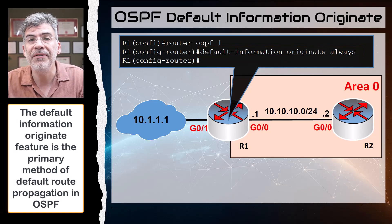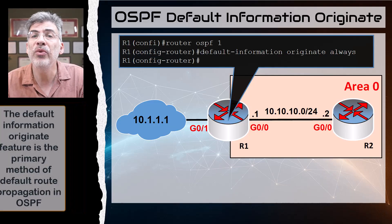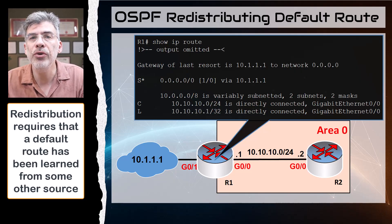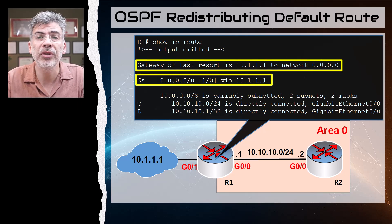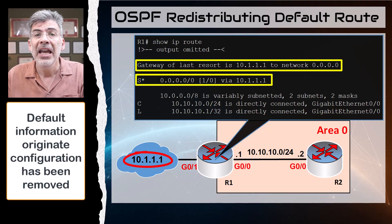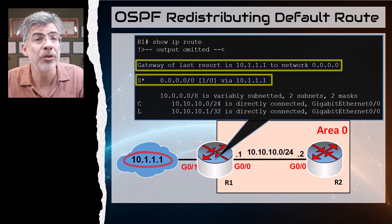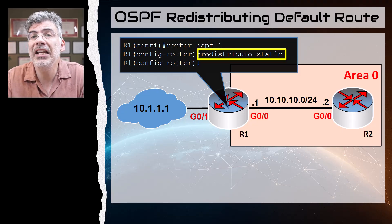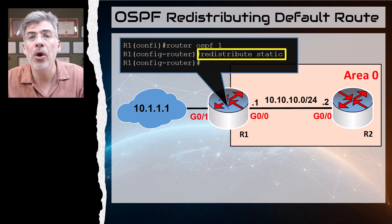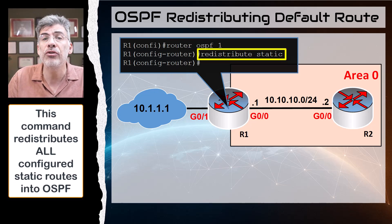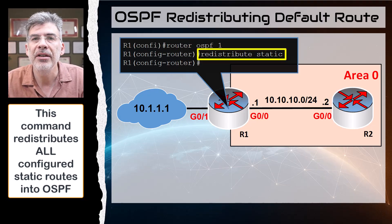The default-information originate feature is the primary way to advertise default routes in OSPF, but you can also do it using redistribution. For redistribution to work, we must have learned of a default route on R1 from some other source. Let's assume we have a static default route configured in R1 as before, and we've removed the default-information originate command completely. We advertise the default route using the redistribute static command. In this case, since we only have one static route on R1, only the default route is redistributed into OSPF — but if we had other static routes, they would be redistributed too.